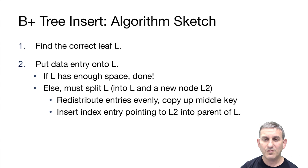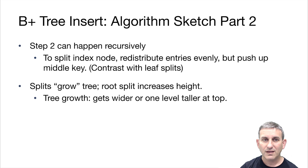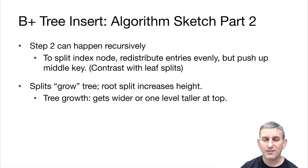That index entry is going to point to L2, and it needs to be inserted into the parent of L. Now this step of splitting and forming something to insert above is recursive, so if the parent is full, we need to split the parent, and so on. For interior index nodes, to split those, we do the same — we redistribute the entries evenly, but in this case, rather than copying up the middle key, we push up the middle key, as we saw in our example.